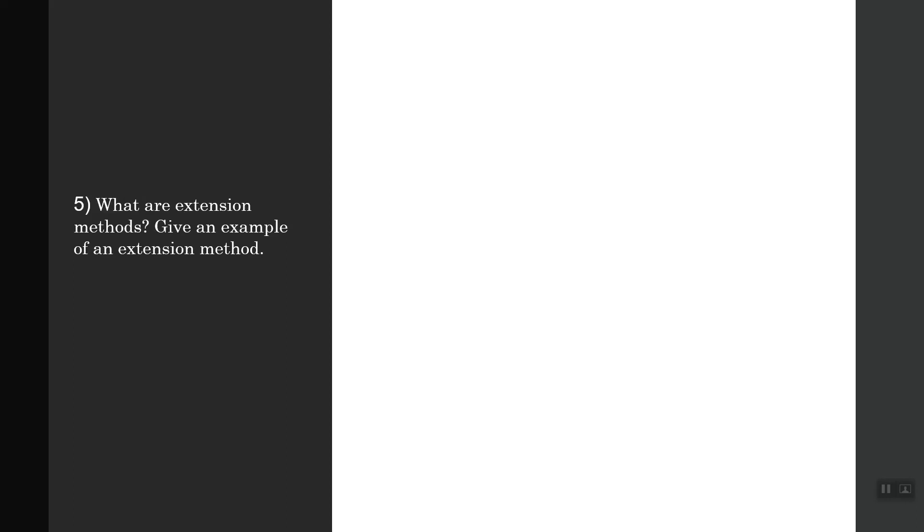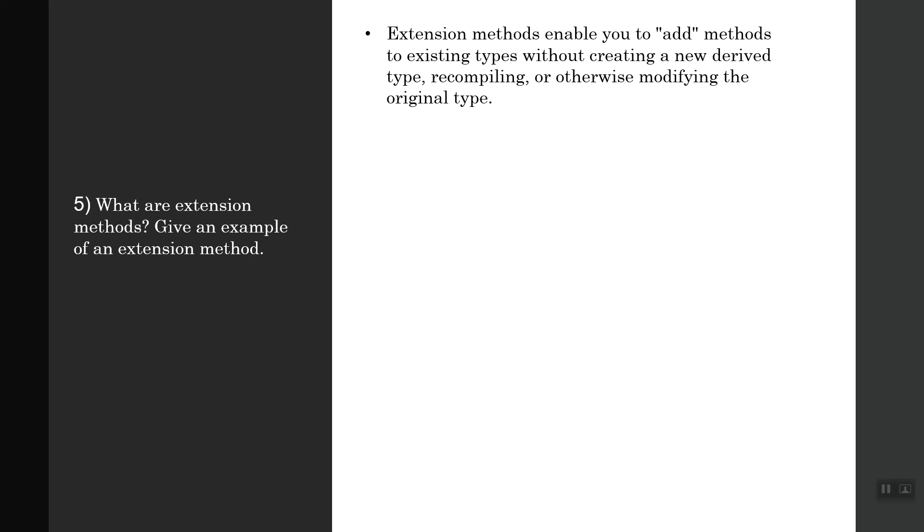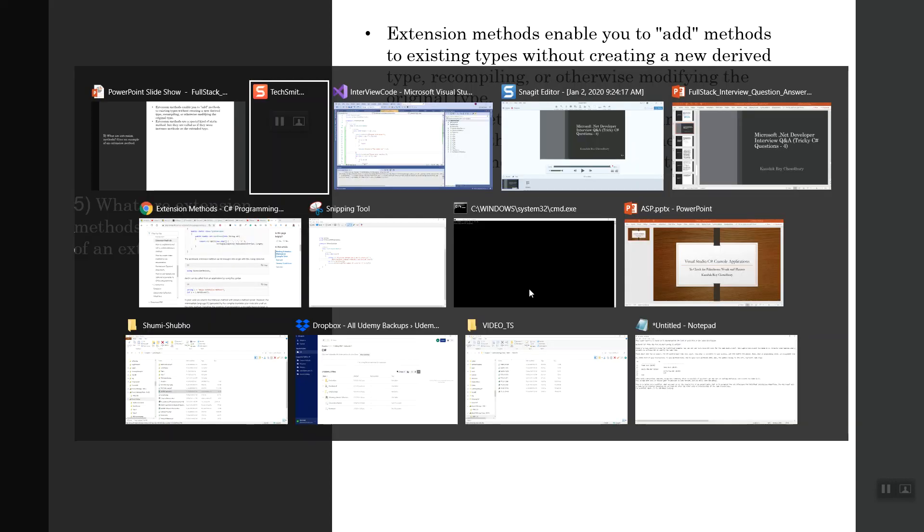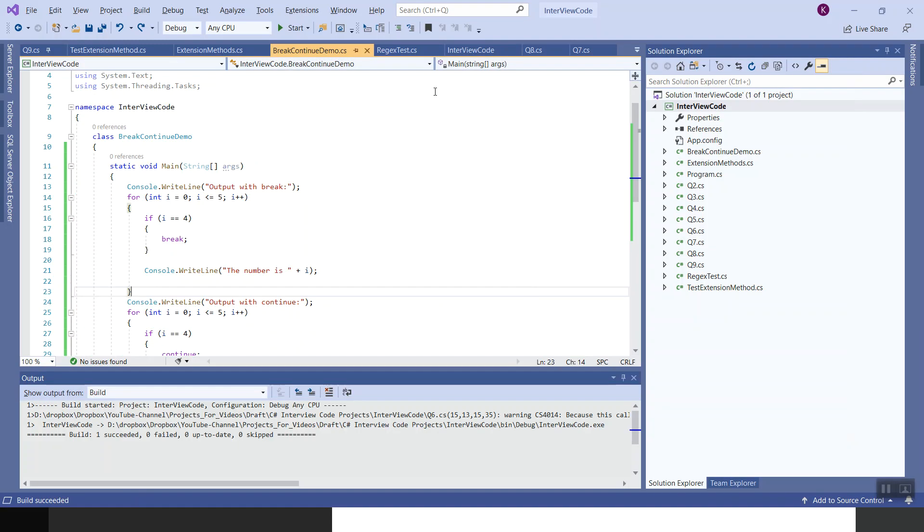What are extension methods? Give an example of an extension method. Extension methods enable you to add methods to existing types without creating a new derived type, recompiling or otherwise modifying the original type. Extension methods are a special kind of static methods, but they are called as if they were instance methods on the extended type. Let's flip over to Visual Studio and see how the extension methods work.